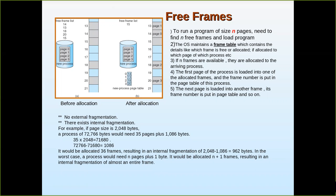The operating system maintains a free frame table which contains details like which frame is free or allocated, and if allocated, to which page of which process. We call the user process divided into pages, and when it is allocated in the main memory, we call it a frame. The page size and frame size must be the same — if the page size is 512 bytes, the frame size also must be 512 bytes.